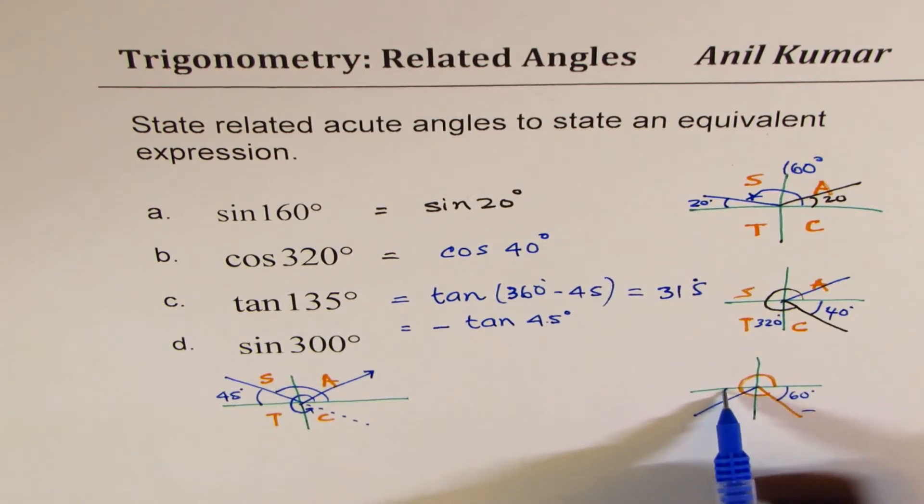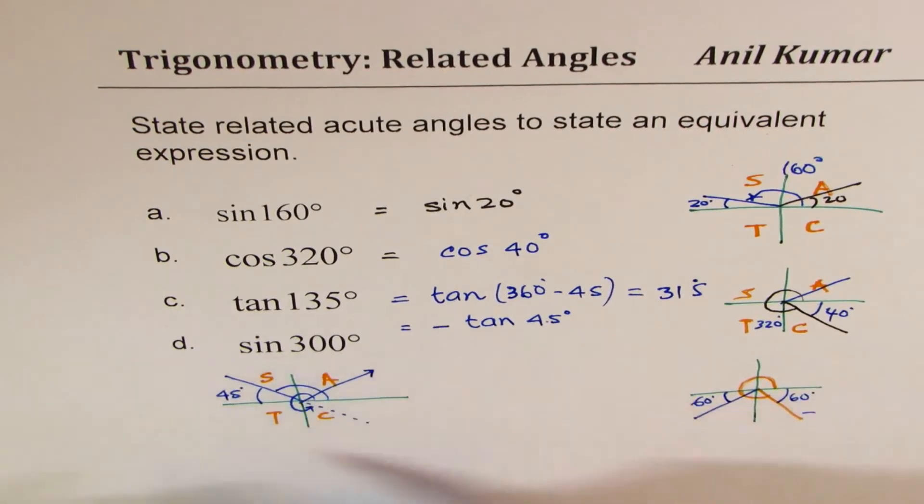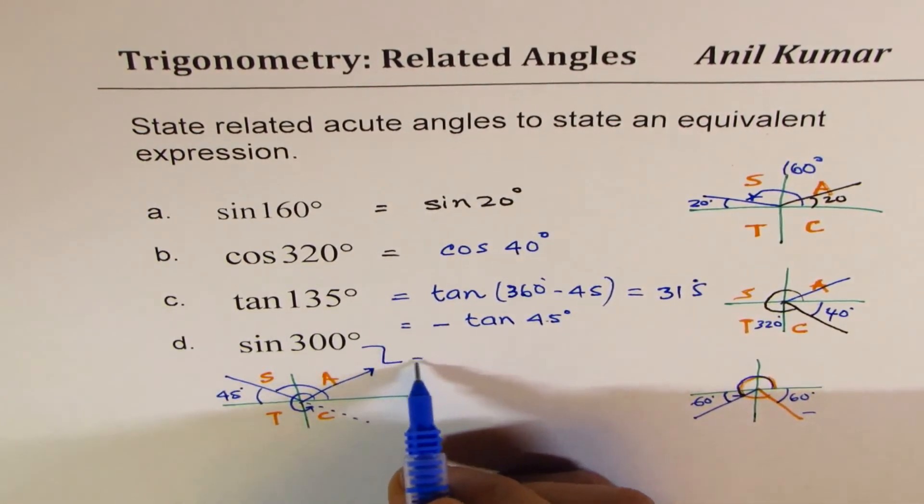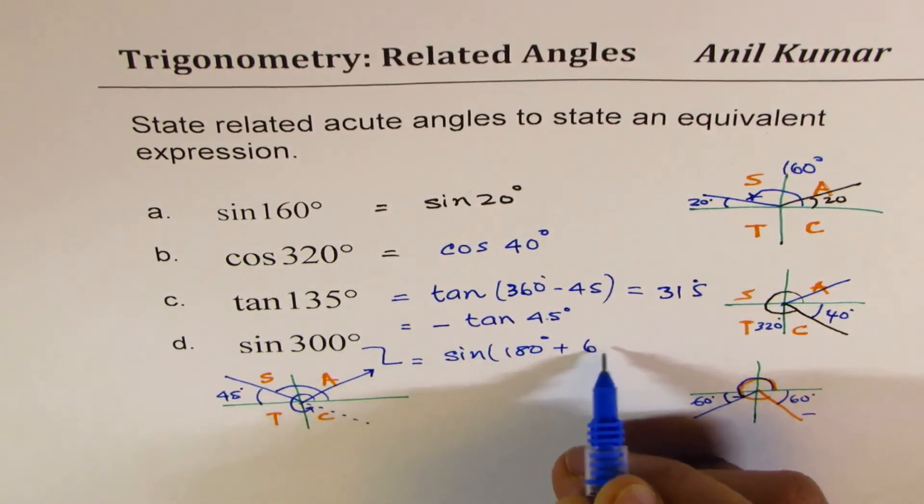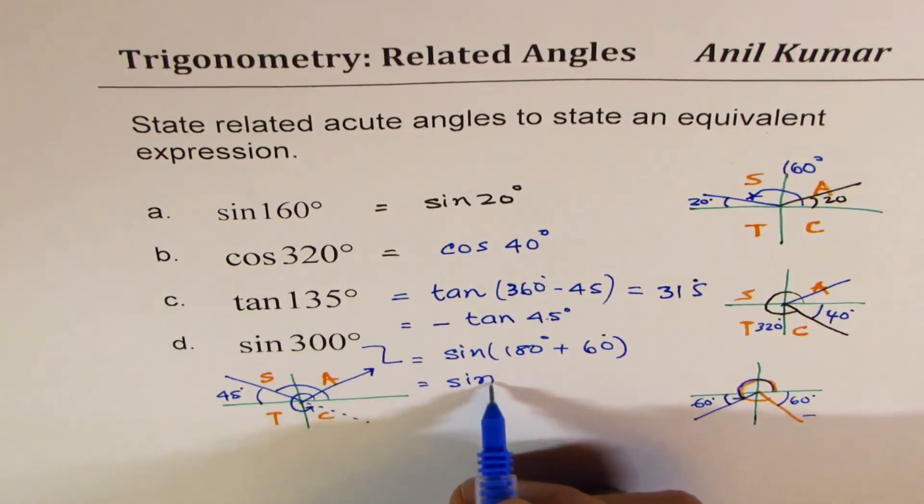So an acute angle of 60 degrees in quadrant 3 will also give us the same result. So it becomes 180 plus 60. So for this, the answer is sin 180 degrees plus 60 degrees, which is sin 240 degrees.